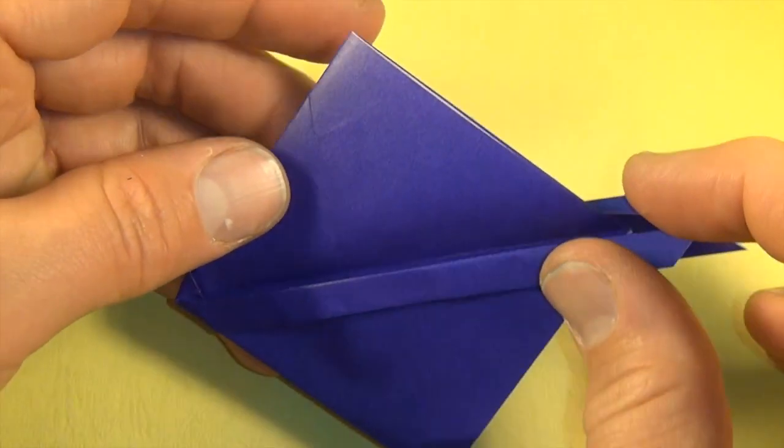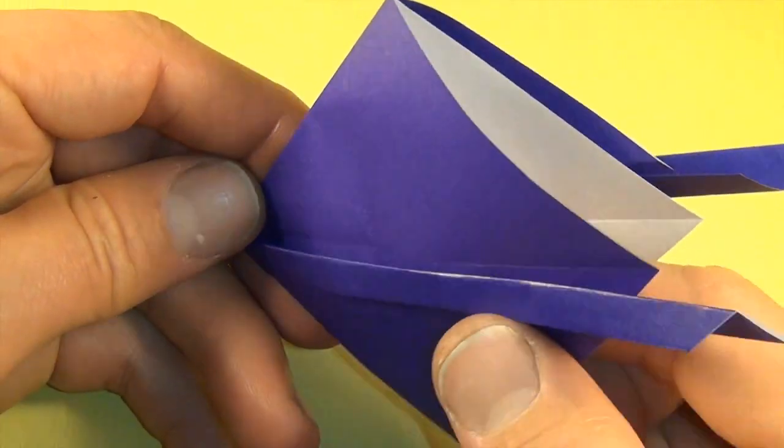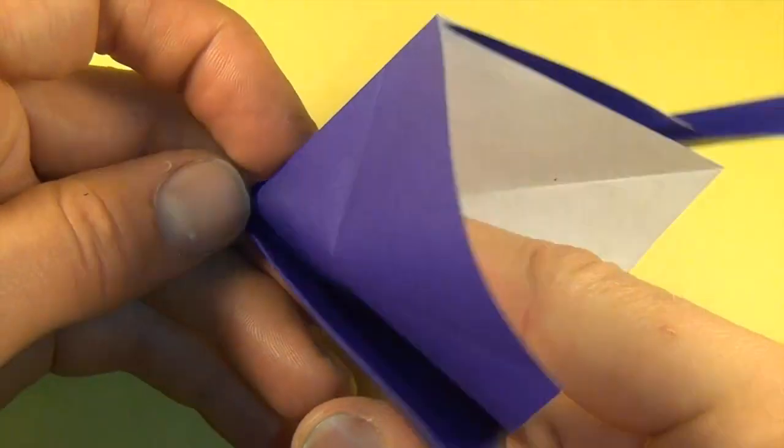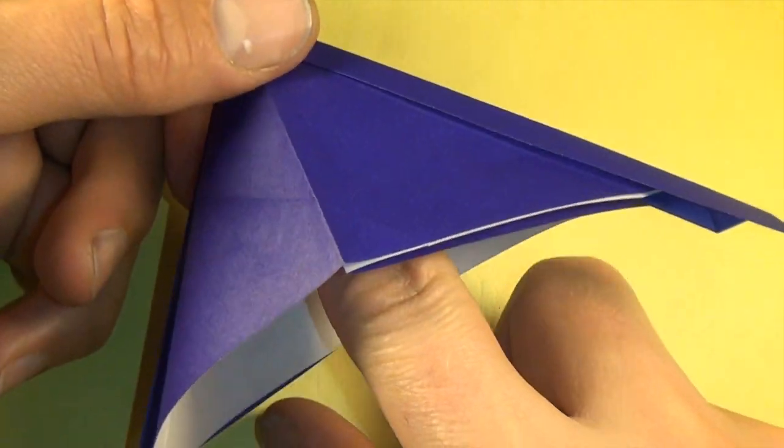Now open the big pocket. Put your finger all the way to the bottom. So we're going to flatten it into a triangle.